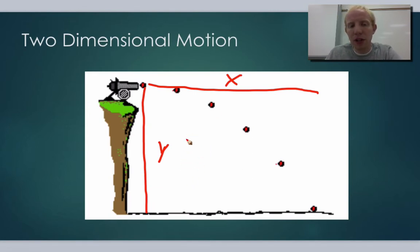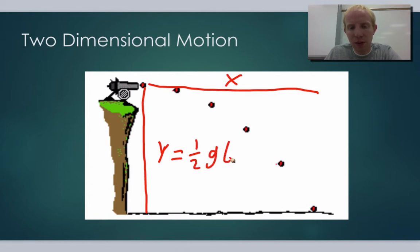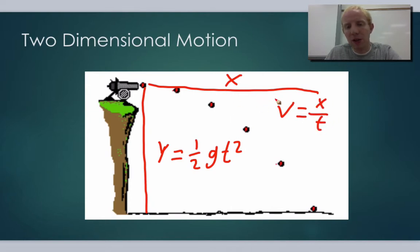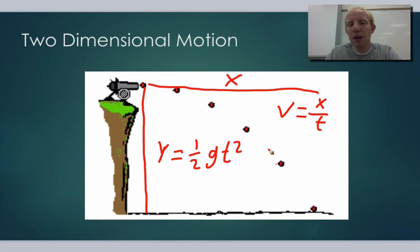We can use the same equations. For example, if an object was falling, we still use the equation y equals one-half g t squared. That's going to tell us how tall the cliff is or how long it takes to hit the ground. Then we can treat the x direction with the equation for velocity: velocity equals x over time, or displacement over time. Because there's no acceleration in the x direction, it's just moving at a constant velocity. So we solve one equation and plug it into the other to get both the x and y motion.